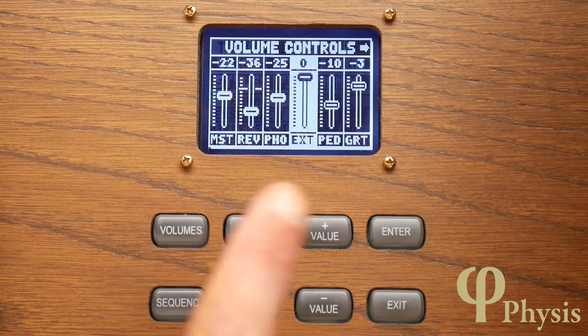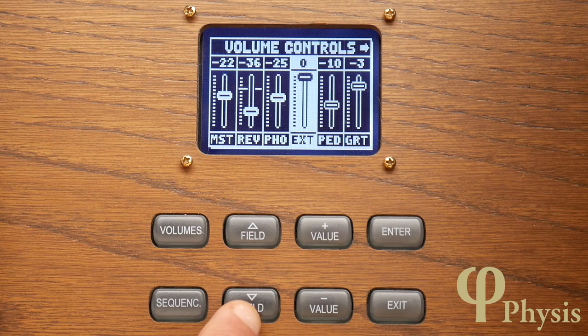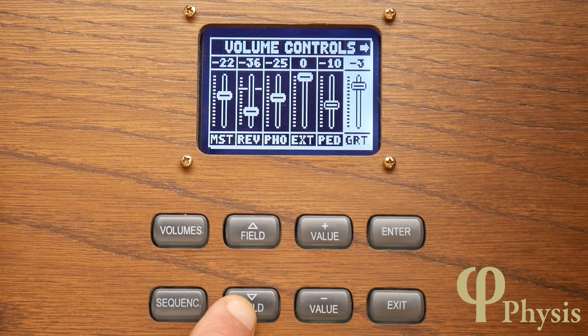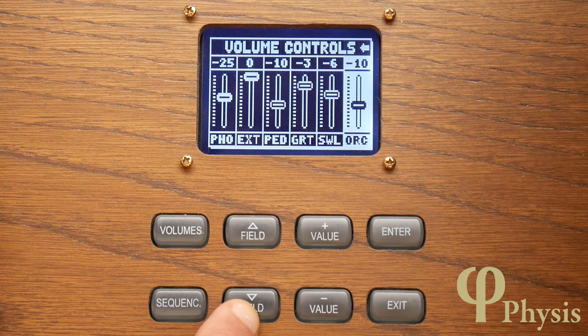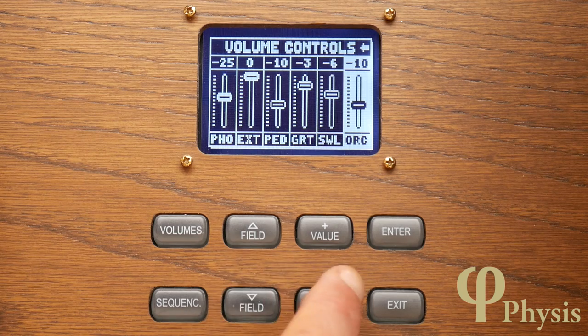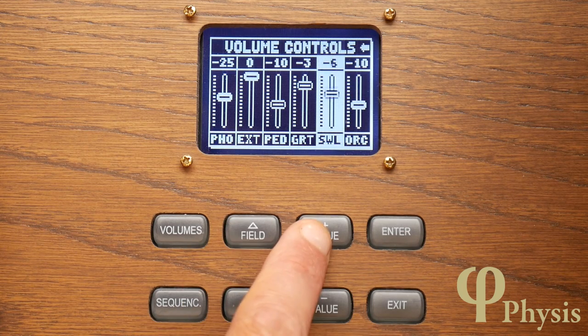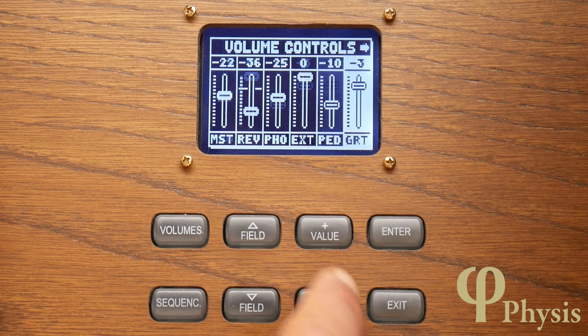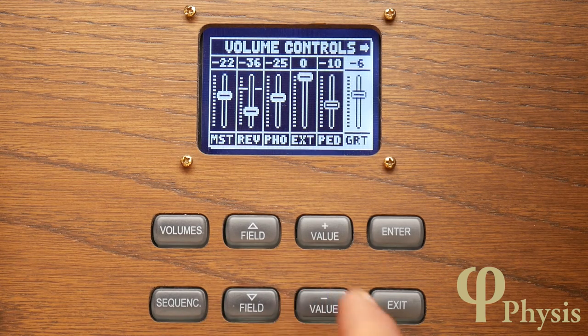We need to press volumes quite regularly, otherwise it reverts back to the main screen. We've got controls then for the individual levels of the divisions: pedal, grate, swell and the orchestral voices. So we could, for example, make the swell a bit louder and the grate a bit quieter.